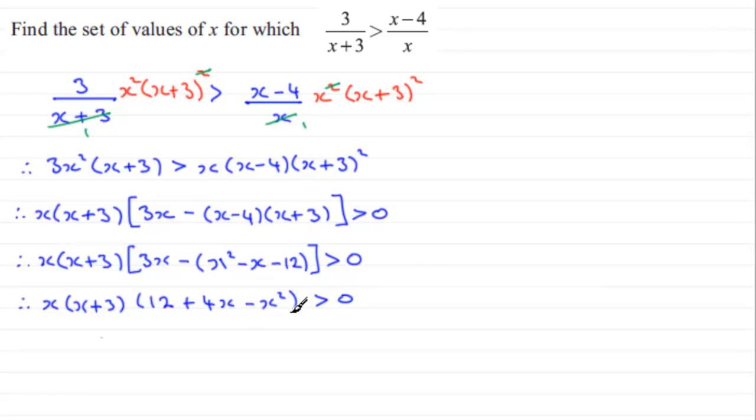Now I can factorize this quadratic factor and I can see that we're going to have x times x plus 3 multiplied by, well I have two brackets here, and in these brackets it will be 6 and 2 to give me the 12, and then we'll have minus x there and plus x there. That checks out because we've got 6x minus 2x which is the 4x, and then minus x squared, and this is greater than 0.